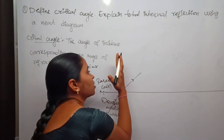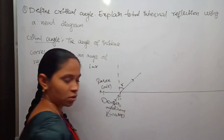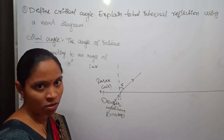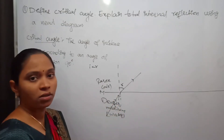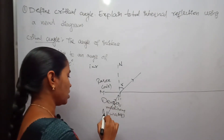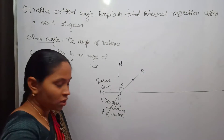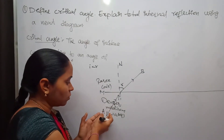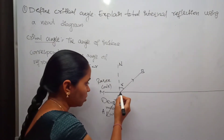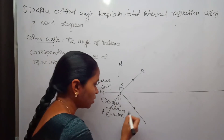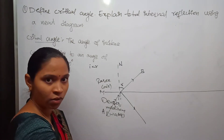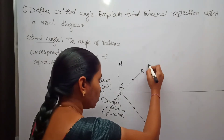Whenever light travels from the denser medium to the rarer medium, the refracted ray will bend away from the normal, and the angle of refraction will be greater than the angle of incidence. I am taking the incident ray as A and the refracted ray as B. The total light incident on the interface is not all refracted — part of it is also partially reflected.